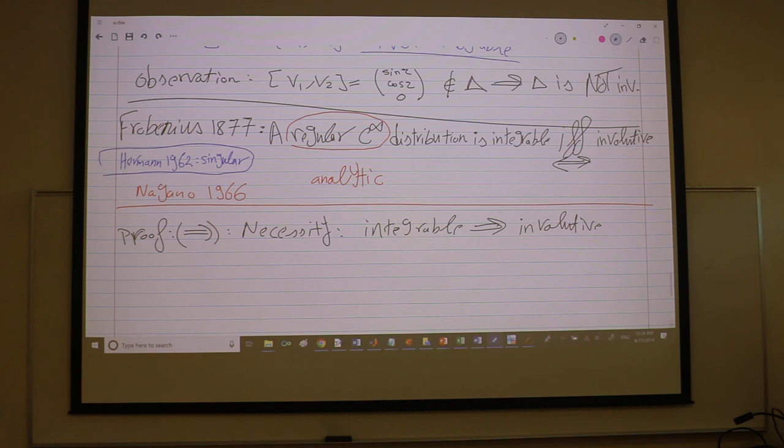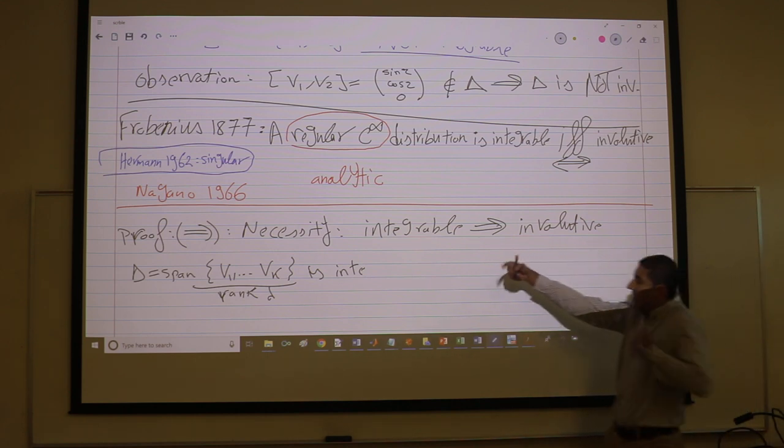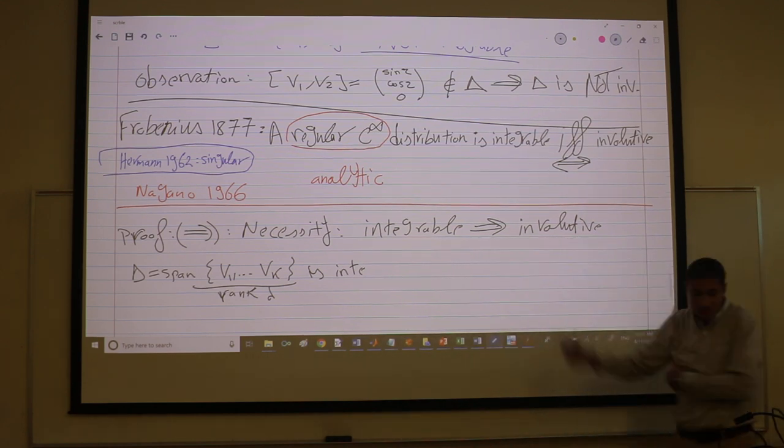And we can prove it very easily because it is integrable means what? Yes, exactly. So delta is integrable. Let's say delta is the span of v1 up to vk and these guys let's give them rank d or something. It is integrable. We're trying to prove the statement. So I'm giving that it's integrable and I want to reach here.